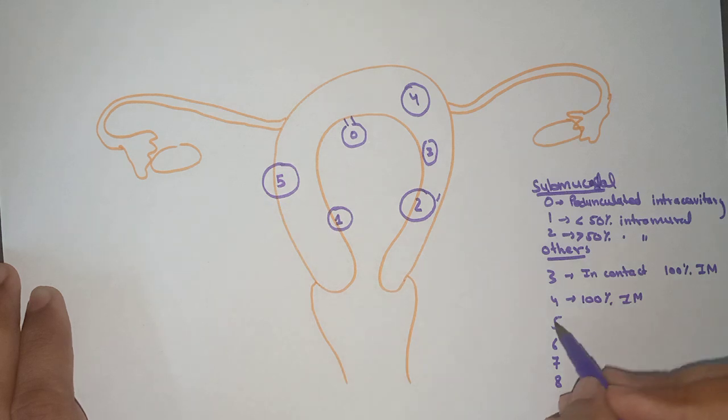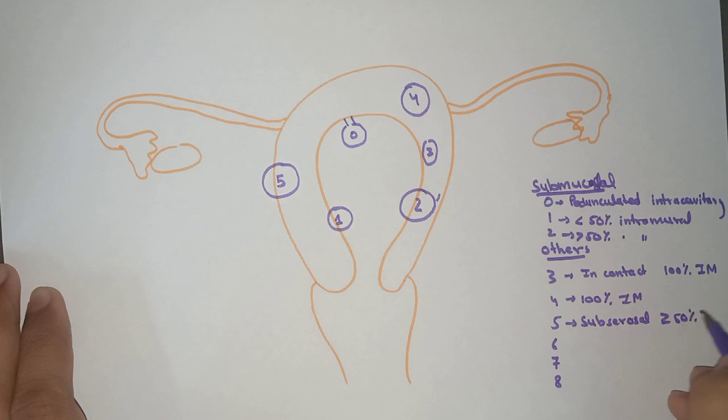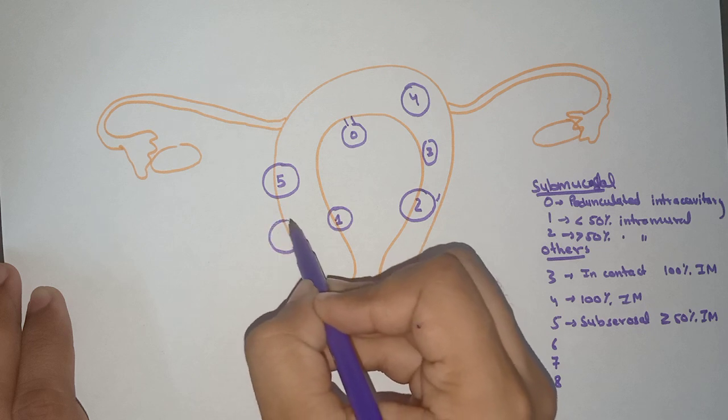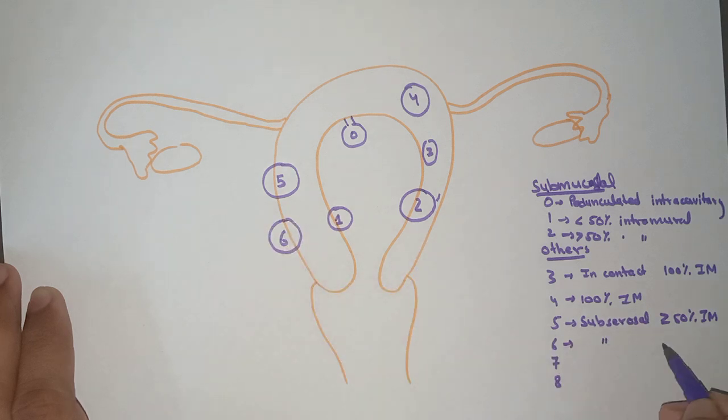Type 5 is subserosal with more than or equal to 50% intramural. Now coming to Type 6. Type 6 is also subserosal but less than 50% intramural.